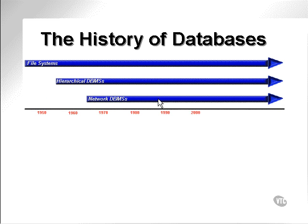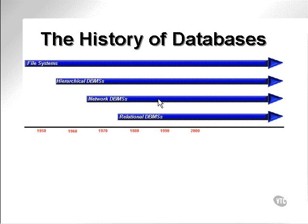In the mid-60s, the network database was invented. This was the next generation on from the hierarchical database. Around about the mid-70s, somebody came up with an idea called a relational database, based on mathematical set theory. We'll get into that at a later stage.